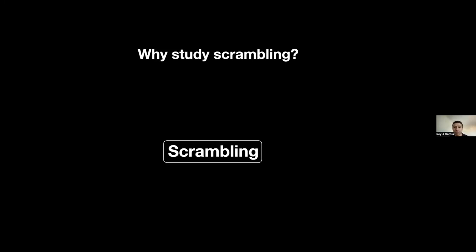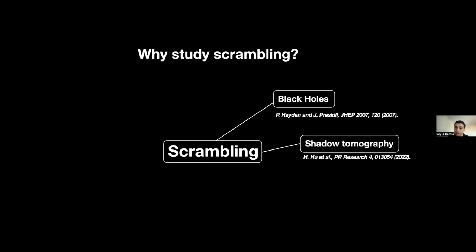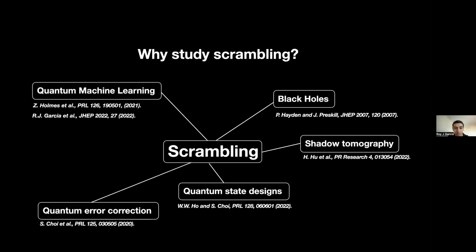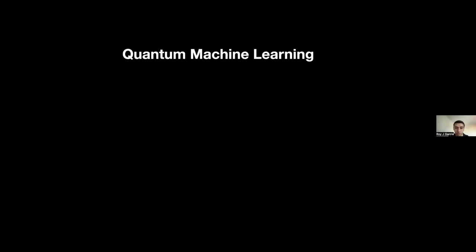We're interested in studying scrambling because it has many connections to different areas of quantum information. One of the most notable connections is to black holes — it turns out black holes are fast scramblers, meaning they can spread out information exponentially quickly. It's also been shown that scrambling can help you perform shadow tomography, and that scrambling is related to quantum state designs, quantum error correction, and quantum machine learning.